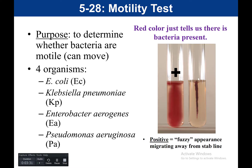In the negative, we just see growth along the stab line — there is no fuzziness, and the bacteria only grew where they were inoculated. That's going to be our negative. Both positive and negative will have growth and you will see red, but it's where the red is that tells us whether it's positive or negative. If it's away from the stab line, that is positive for motility — the bacteria were able to move through the agar. If bacteria are only along the stab line, that is going to be a negative.